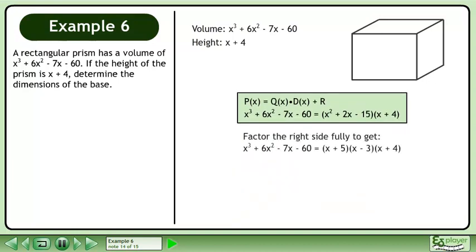Factor the right side fully to get x plus 5 times x minus 3 times x plus 4. The height is x plus 4 and the dimensions of the base are x plus 5 and x minus 3.